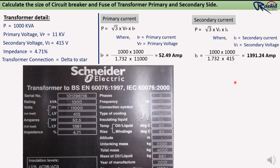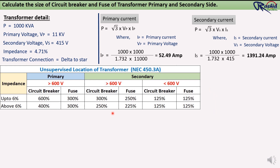After getting primary and secondary current, we can easily calculate circuit breaker or fuse size. For calculation, we will follow NEC 450.3 standard. If transformer impedance is up to 6%, we multiply a 600% safety factor by the primary current to get the proper circuit breaker size, and a 300% safety factor for fuse calculation. This applies only if primary voltage is more than 600 volts. In our example, primary voltage is 11,000 volts, so we will calculate as per this condition.